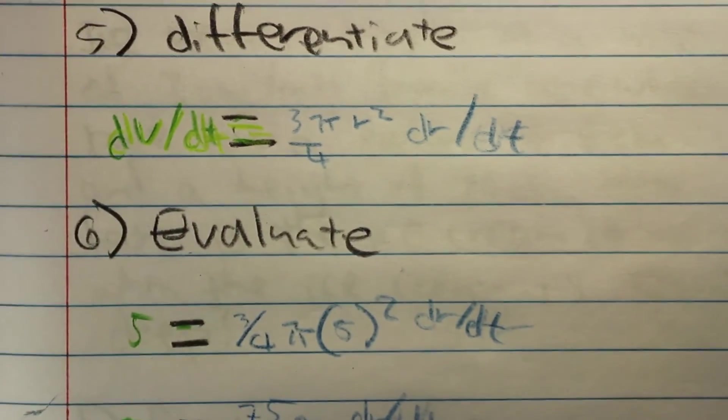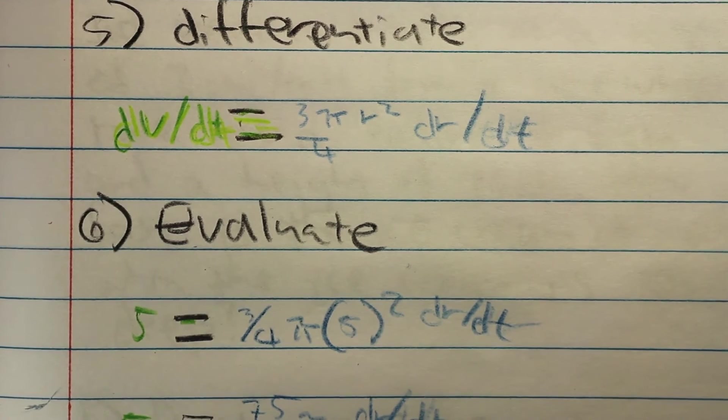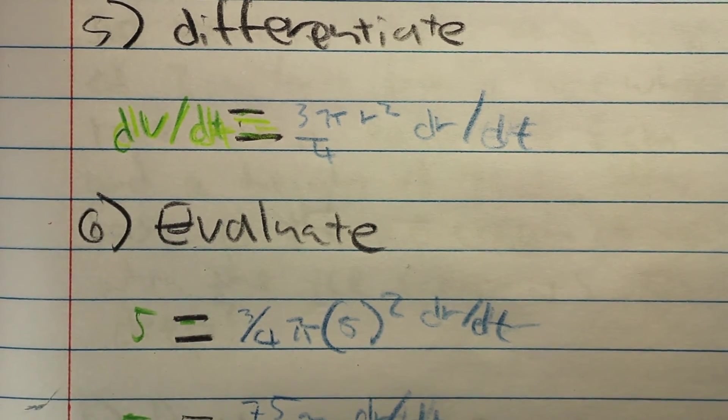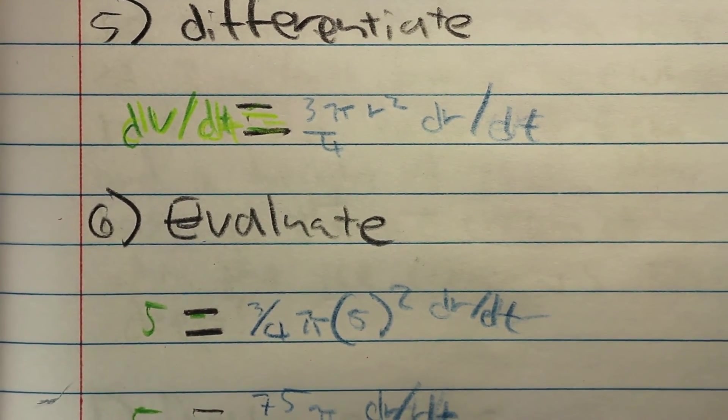Moving right along, from that equation, you can differentiate it and you would get dV/dt equals 3π r² over 4 dr/dt.